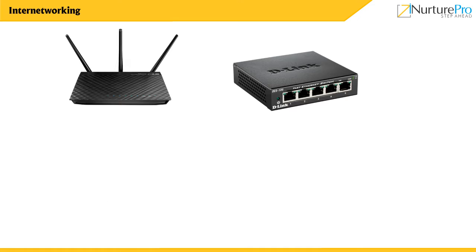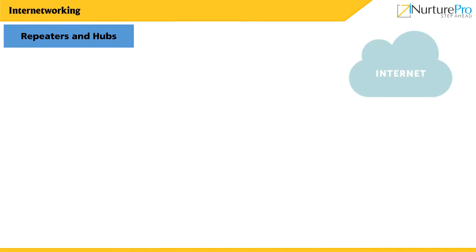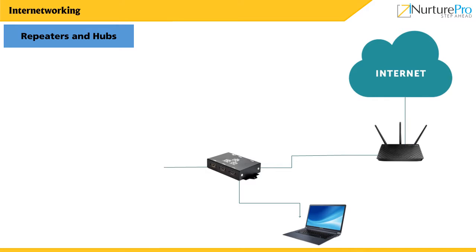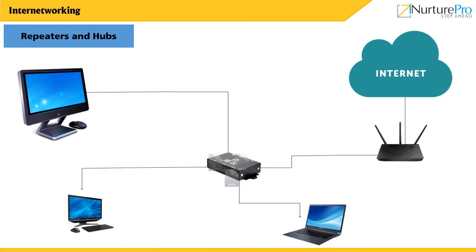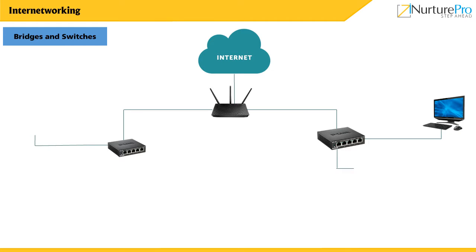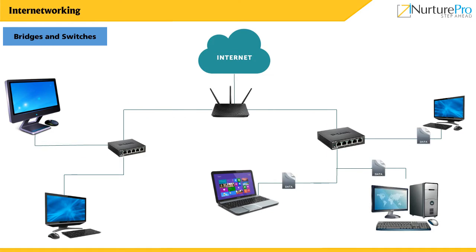Let's be familiar with the devices used for combining small networks into a single network. Repeaters and hubs operate at the physical layer and regenerate the data for all devices connected in the network. Bridges and switches operate at the data link layer and send packets to another network by examining the packet MAC address.